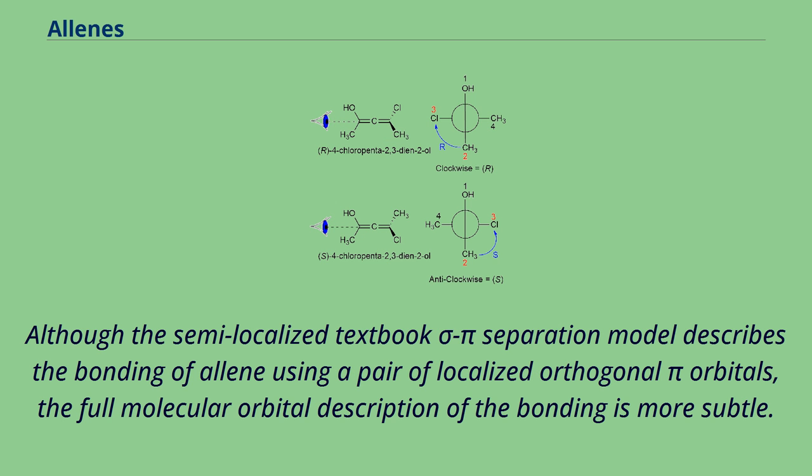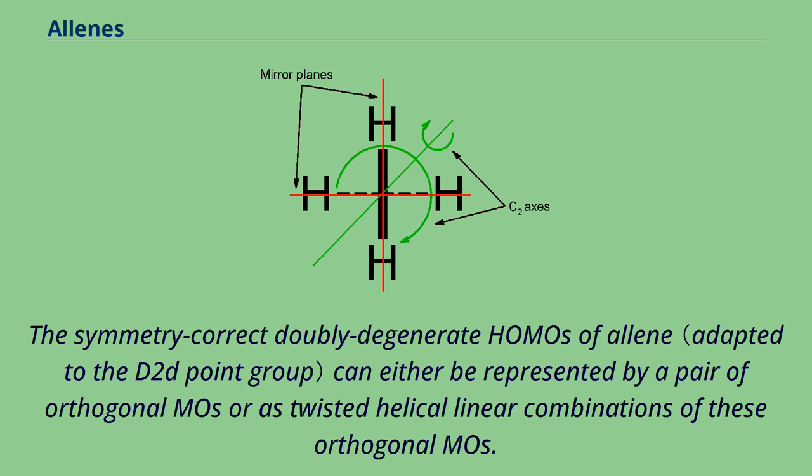Although the semi-localized textbook sigma-pi separation model describes the bonding of allene using a pair of localized orthogonal pi orbitals, the full molecular orbital description of the bonding is more subtle. The symmetry correct doubly degenerate HOMOs of allene can either be represented by a pair of orthogonal MOs or as twisted helical linear combinations of these orthogonal MOs.